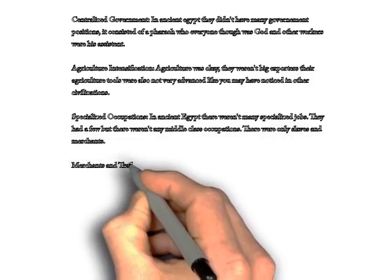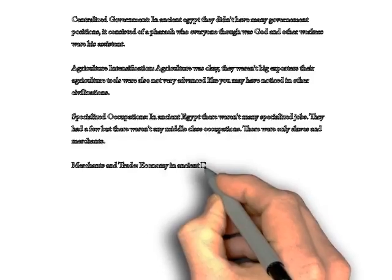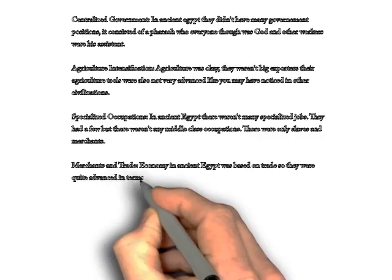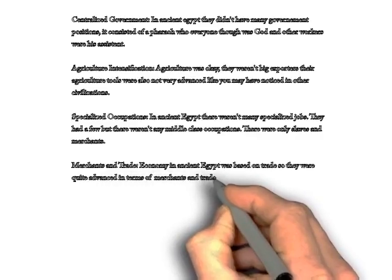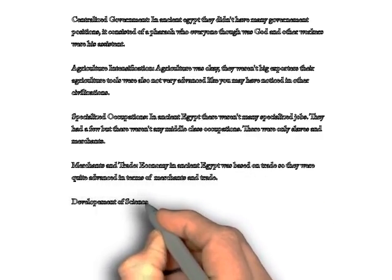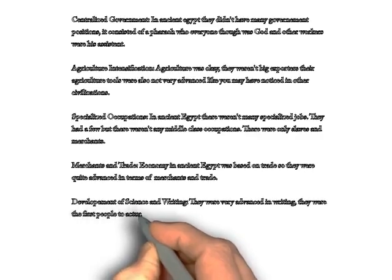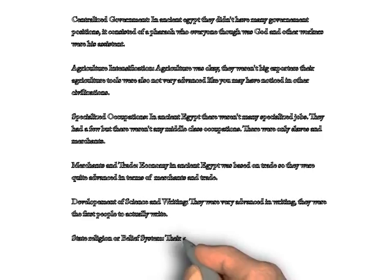Merchants and Trade. The ancient economy was based on trade, so they were quite advanced in that. Development in Science and Writing — the ancient Egyptians were very advanced in writing. However, their state religion or belief system, while one of the first, was still not strong enough to be compared with others.